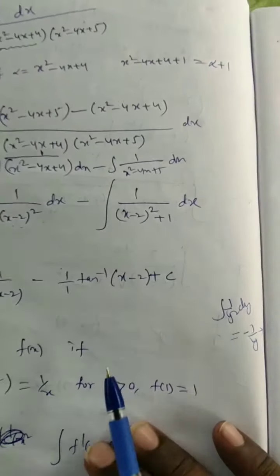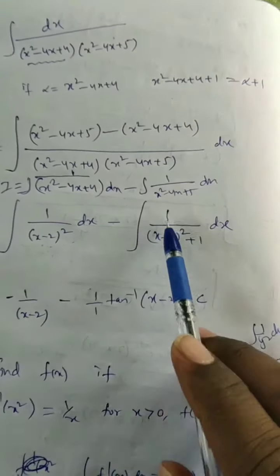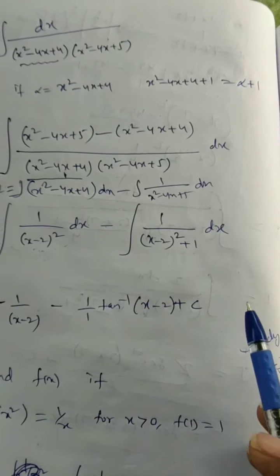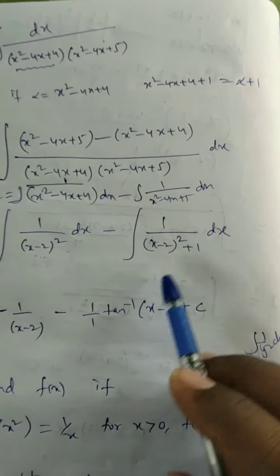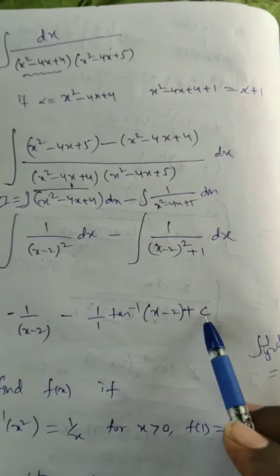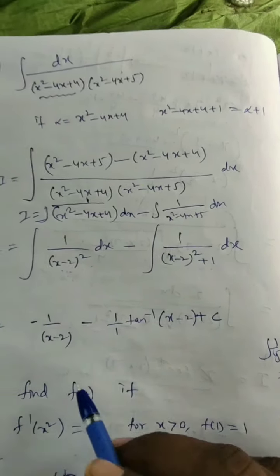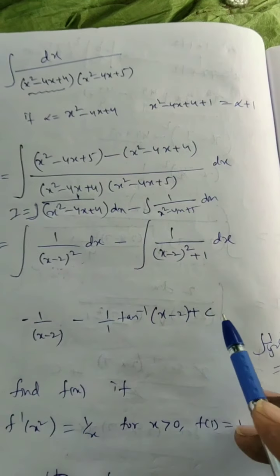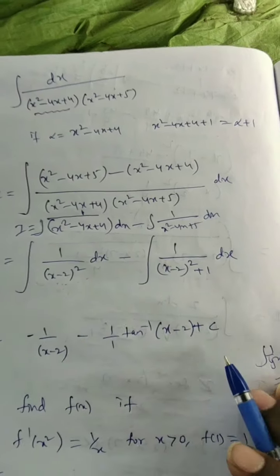Putting it together, the answer is −1/(x − 2) − tan⁻¹(x − 2) + c. This formula was already discussed in previous sections.